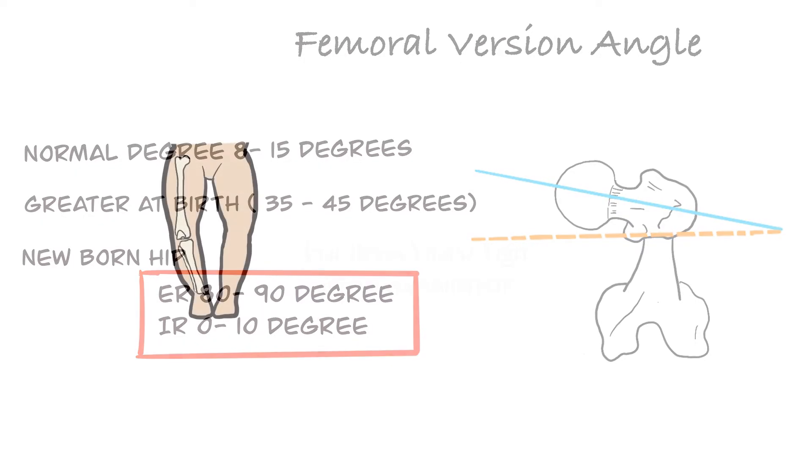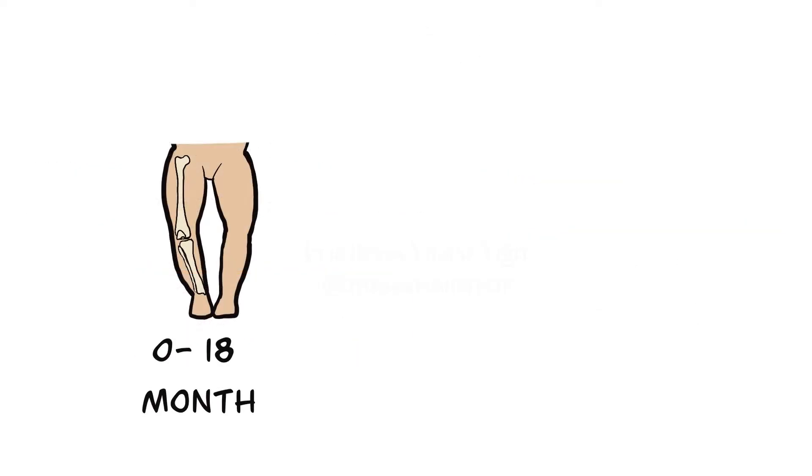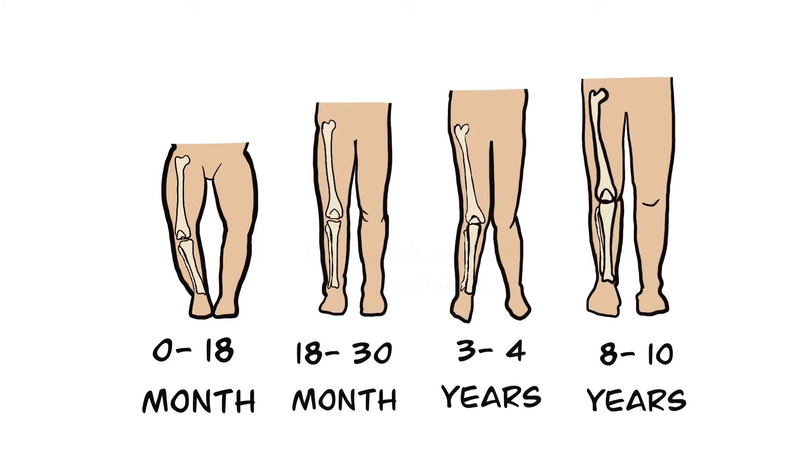At the age of 1 it decreases to 30 to 40 degrees. Around 16 years of age, skeletal maturity is started to complete and this angle decreases to even 10 degrees.